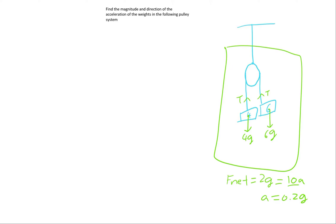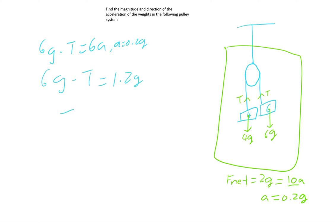We will have to find the tension of the system. We will simply take out any of the free body diagrams and analyse it, taking reference from the 6kg one. The 6kg weight will be moving downwards. Therefore, 6g minus T will be equal to 6a. Since a is equivalent to 0.2g, we rewrite this as 6g minus T is equivalent to 1.2g, which tells us that T is equivalent to 4.8g. And we are done with the question.